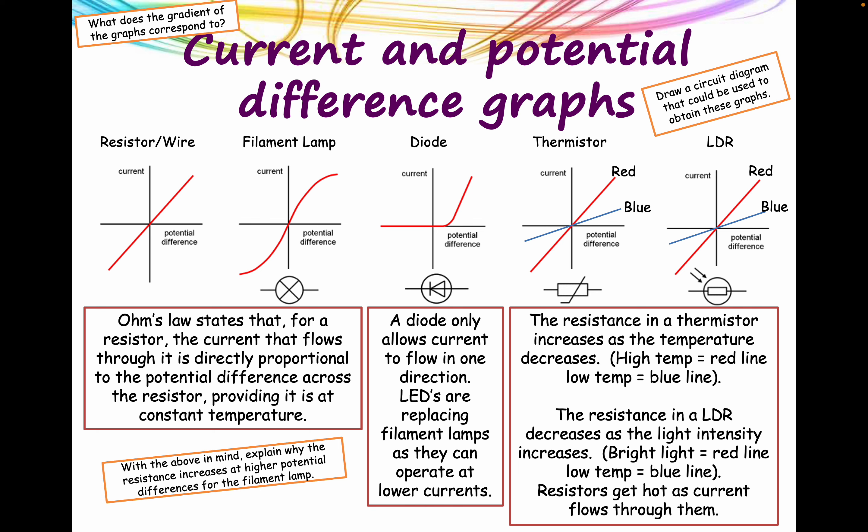Thermistors are also semiconductor devices, usually with a negative temperature coefficient. When temperature increases, the current increases and the resistance decreases. The hotter they get, the less resistance they have. They've drawn these as straight line graphs, but there are other graphs to look at. The word thermistor relates to 'therm' meaning heat.